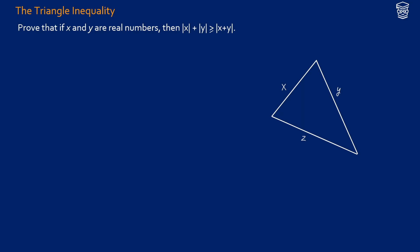Can you prove the triangle inequality? It states that if x and y are real numbers, then the absolute value of x plus the absolute value of y is greater than or equal to the absolute value of x plus y.